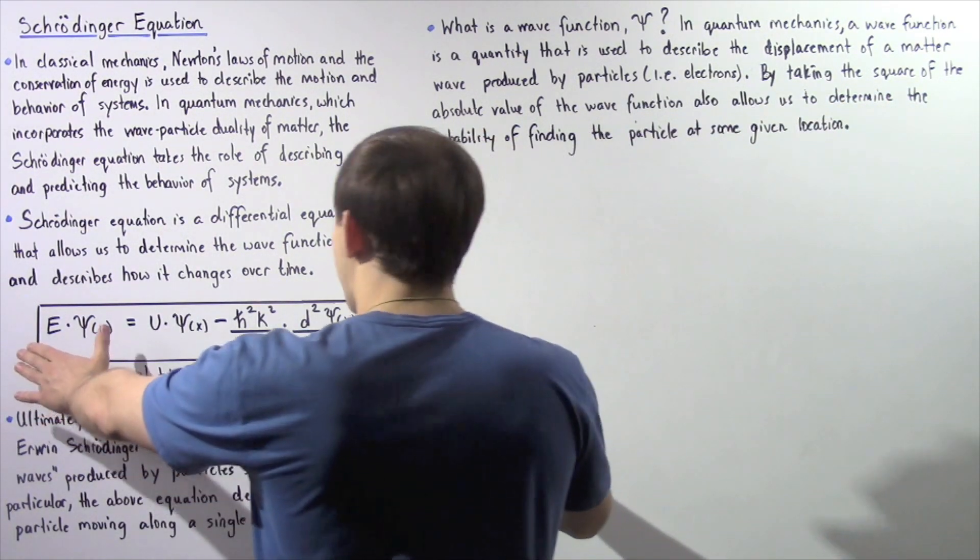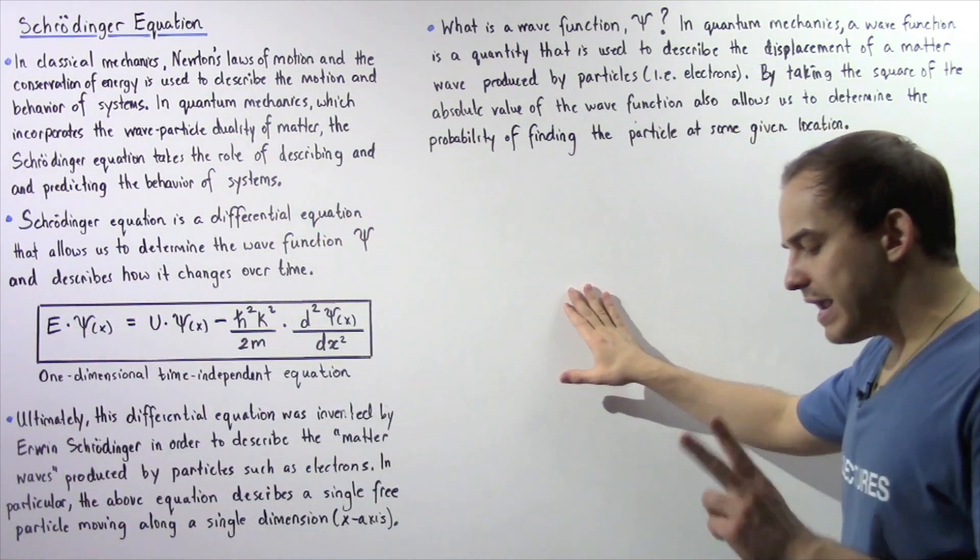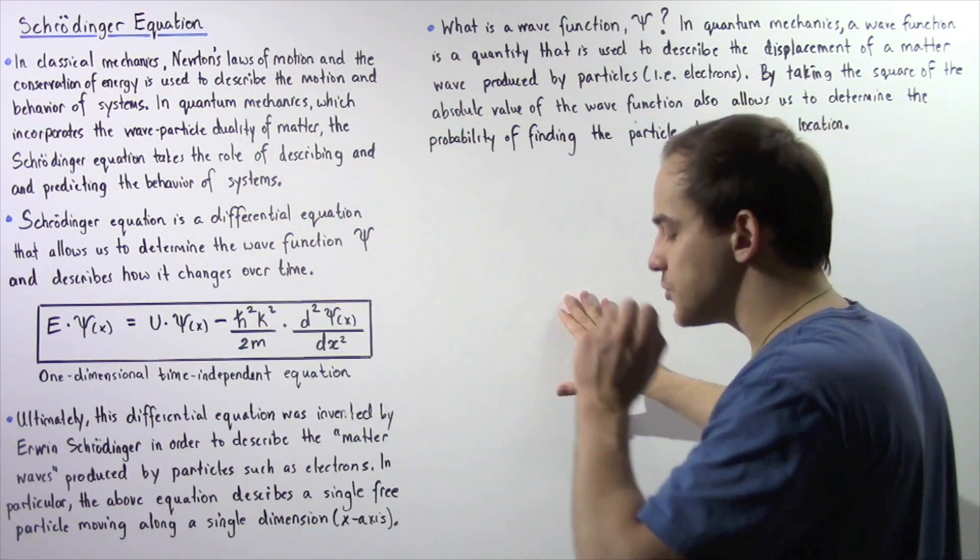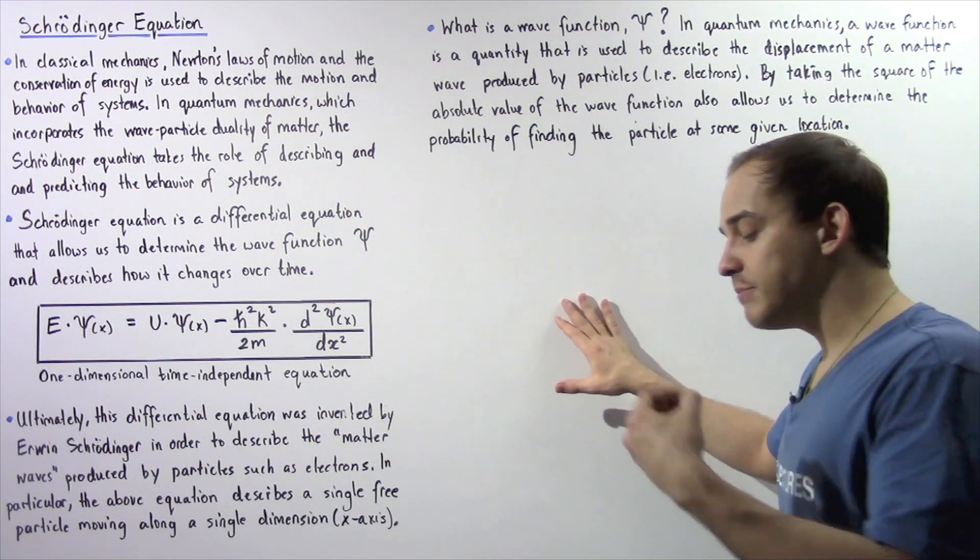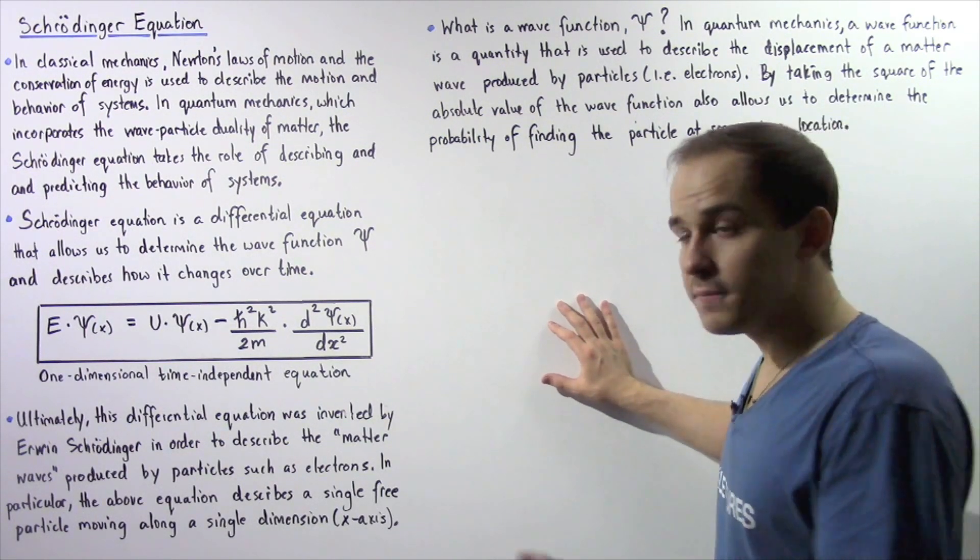First, let's look at the following equation. So there are two main forms of Schrödinger's equation. We have the time dependent and the time independent form.